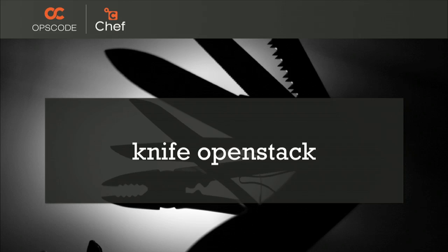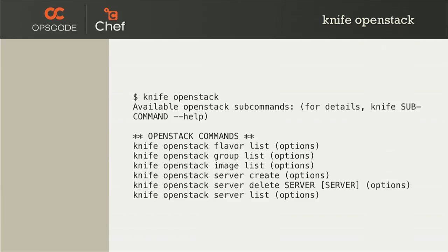Knife is our command line tool for talking to APIs — it's what we use to talk to our own API so we can query the Chef server and gather information. It also talks to cloud APIs; in this case, the OpenStack API. We're able to gather information from the Nova API: the list of flavors, security groups, images, and we can create and delete servers from the command line.